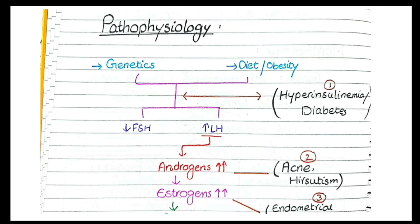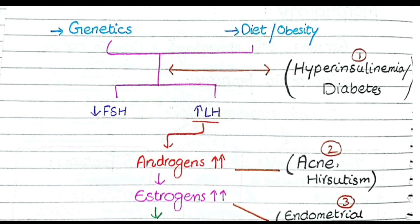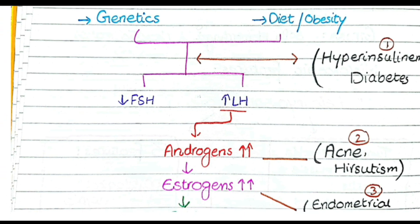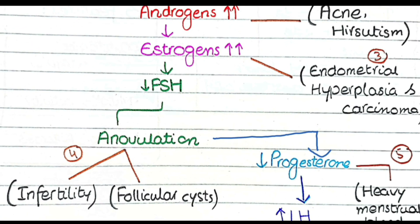The main problem is decreased FSH and increased LH. An increase in luteinizing hormone induces the development of androgens, so androgen levels are increased. In women, there is an enzyme called aromatase that converts androgens into estrogens, so the increased quantity of androgens is also converted into estrogen. As a result, both androgens and estrogens are increased.